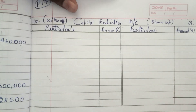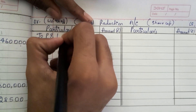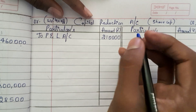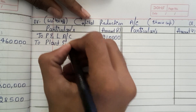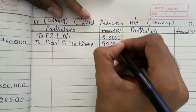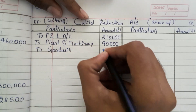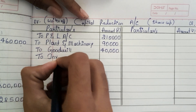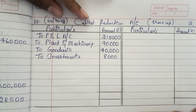So first, we are writing off losses rupees 2 lakh 10,000 — to P&L account 2 lakh 10,000. Next, plant and machinery is also written off — to plant and machinery 90,000. Next, we are writing off goodwill — to goodwill 40,000. Next, we are writing off investments — to investments 8,000 rupees.